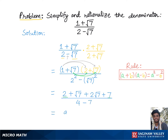The denominator gives us 4 minus 7, which is negative 3. The numerator becomes 2 + 7 = 9, plus √7 + 2√7 = 3√7, giving us (9 + 3√7) over negative 3. We can factor out 3 from the numerator to get 3(3 + √7) over negative 3, and the 3s cancel.